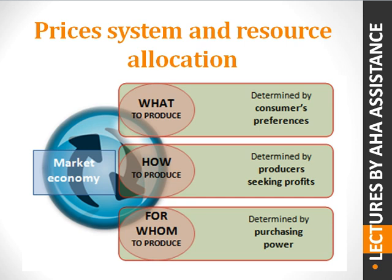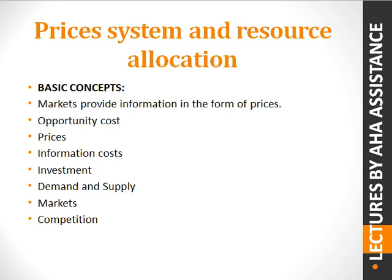Our topic is price system and resource allocation. The factors contributing to the price system and resource allocation include markets, information — how much price should be — opportunity cost, the choices available where selecting one option means missing another, prices, information costs, demand and supply, and market competition. These are all factors included in the price system and resource allocation.